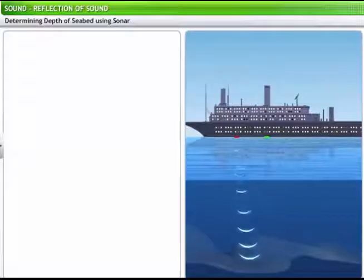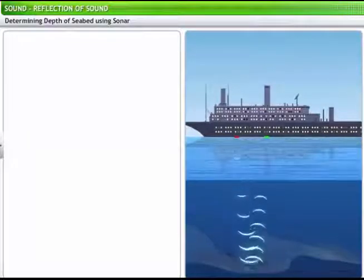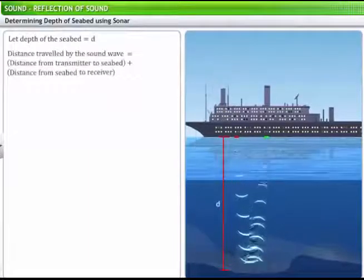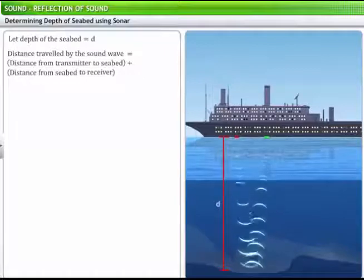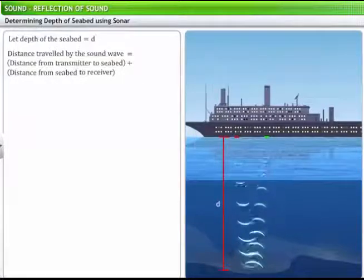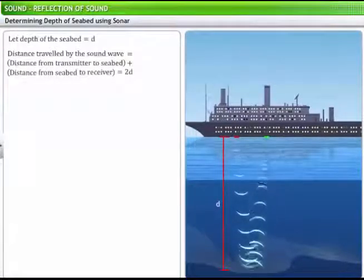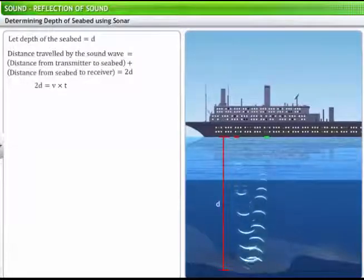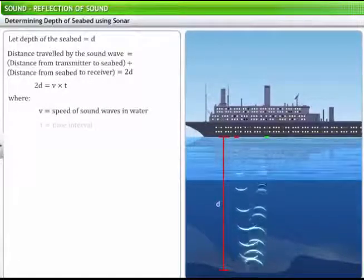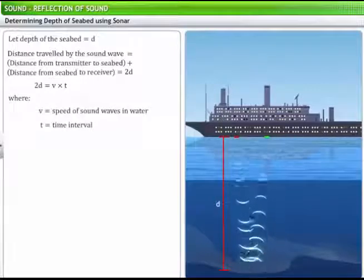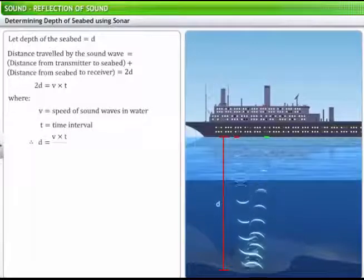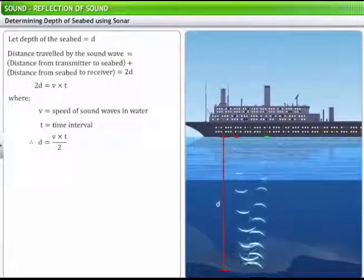Let's consider an example where we use this technique to determine the depth of the sea. Let the distance from the ship to the seabed be d. The sound wave sent to the seabed has to travel twice the distance from the ship to the seabed, i.e., from the transmitter to the seabed and back to the receiver. Twice the distance d is equal to the product of the speed of the sound wave in water v and the time interval between emission and reception of the ultrasound. Thus, the depth of the seabed is equal to half the product of speed of the sound and the time interval.